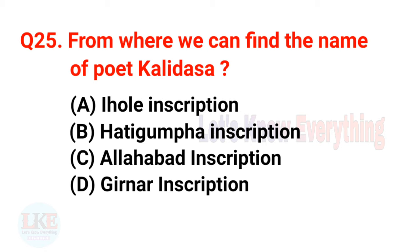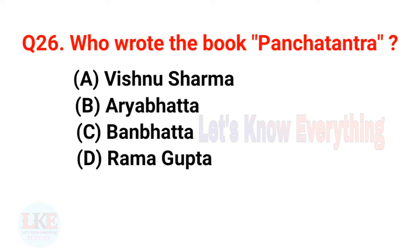Question 25: From where can we find the name of poet Kalidasa? Options: A — Aihole inscription, B — Hathigumpha inscription, C — Allahabad inscription, D — Ghinar inscription. Right answer: option A — Aihole inscription or Aihole Prasasti. Question 26: Who wrote the book Panchatantra? Right answer: option A — Vishnu Sharma. Panchatantra, a famous book during the Gupta period, was written by Vishnu Sharma.